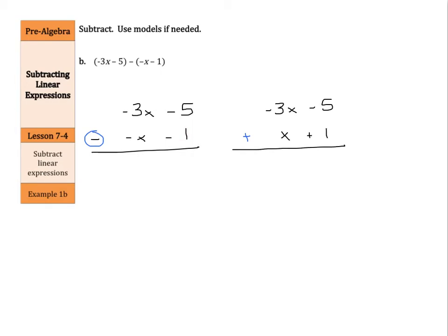And then the opposite of this -1 becomes +1. Now we can take -5 plus a positive 1, and that is a -4 or minus 4. And then -3x + 1x is -2x. So our answer here is -2x - 4.